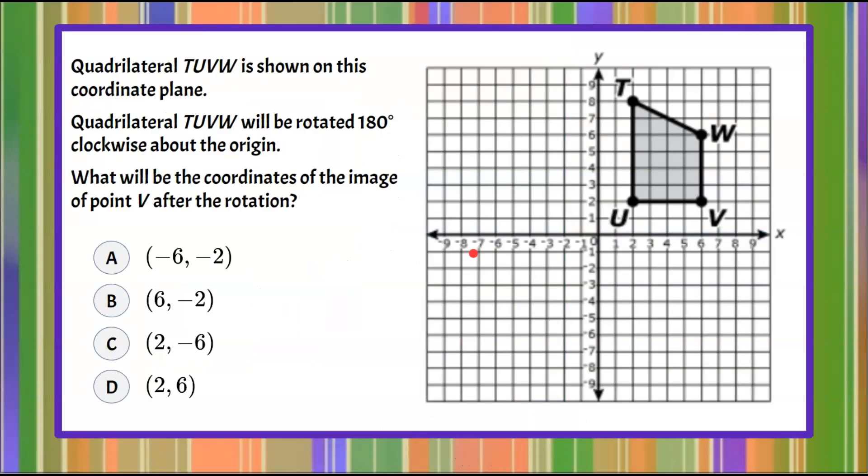Here's our question today. We have quadrilateral TUVW, and it is shown on this coordinate plane. Quadrilateral TUVW will be rotated 180 degrees clockwise about the origin. We're asked what will be the coordinates of the image of point V after the rotation, and you're given four answer choices.